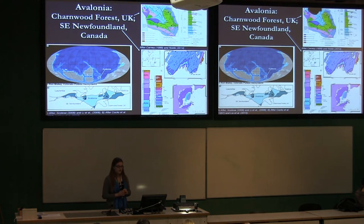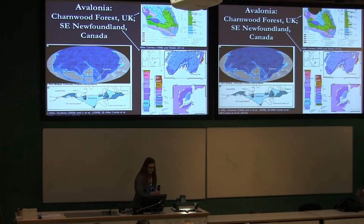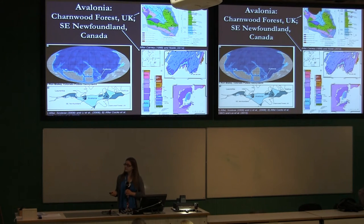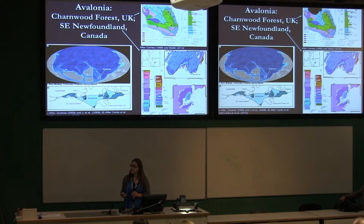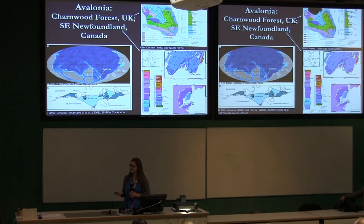I focused on the successions from Avalonia, which makes up modern-day regions including Charnwood Forest in the UK and southeast Newfoundland, which we've heard a lot about from Jack. Back in the Ediacaran, these were situated at around 65 degrees south latitude on a volcanic island arc, and it's this volcanic island arc that was the source of most of the sediment making up the successions that we see — whose depositional environment Jack has I think convinced us of.